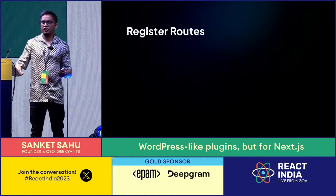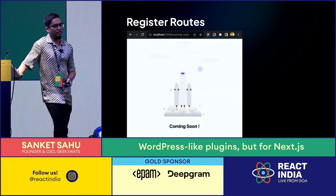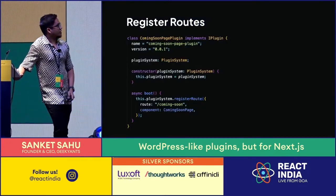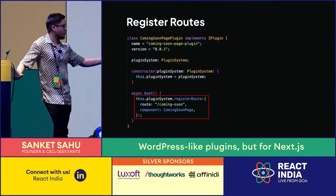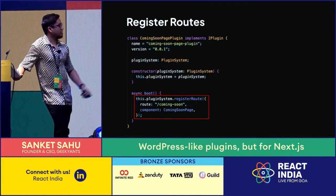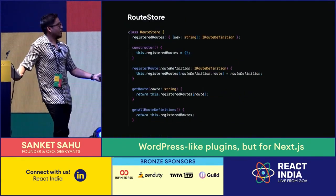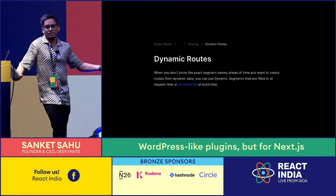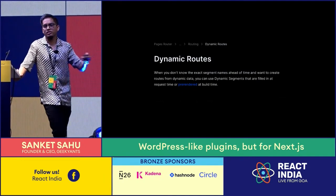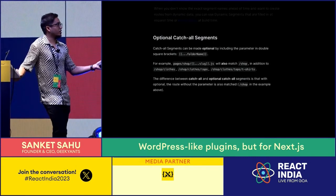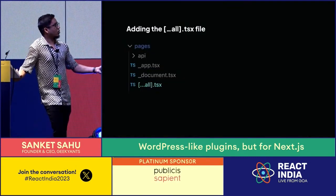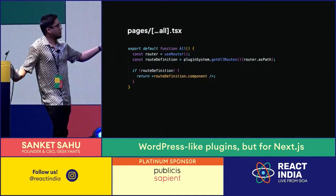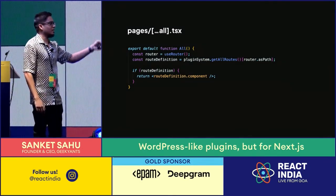If you want to register a route, here I've built a coming soon route plugin. As soon as you drop this plugin in, you get that route and the page. You do it very similarly — but here you use pluginSystem.registerRoute and pass in the component from within the plugin itself. There's a route store in the plugin system that maintains a key-value pair of all the routes. To tap into the Next.js ecosystem, I've used a catch-all route — creating an all.tsx file in the pages folder which pulls all routes and returns the matched route.